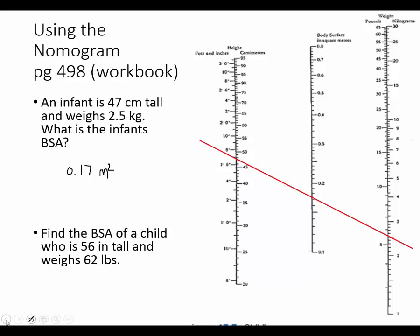Next I'll go to the second child who's listed. For the second child, the height is given as 56 inches. 56 would be 4 feet, which is 48 inches, plus 8 inches. When I look at the height column, it only goes up to 3 feet, 0 inches, so I need to move to the adult nomogram to complete this problem.